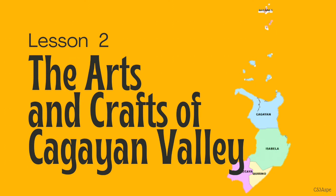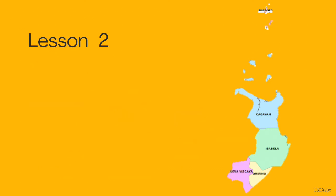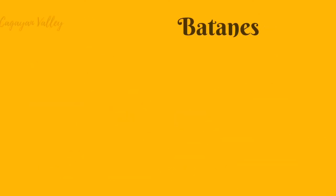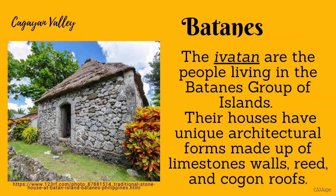To begin with Lesson 2, you will get to know the different arts and crafts of Cagayan Valley, particularly Batanes, Isabela, and Nueva Vizcaya. The Ivatan are the people living in the Batanes group of islands. Their houses have unique architectural forms made up of limestone walls, reed, and kugon roofs.